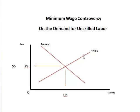This is the supply of unskilled labor, and at the intersection point we've assumed the equilibrium price — I've just made up a price of $5 — and this would be the equilibrium quantity.